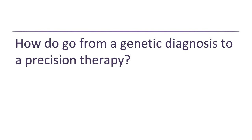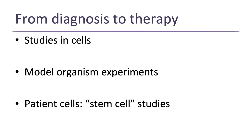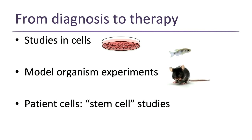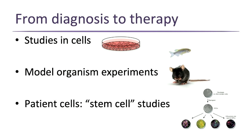Going from a genetic diagnosis to precision medicine — we can do this in several ways. We can study cells in a dish, study model organisms like mice, worms, fish, and fruit flies — many of their genes are very similar to human genes. We can now also use patient cells and do stem cell studies using cells from patients who actually have epilepsy, studying their epilepsy specifically. These provide mechanisms to try and develop new therapies.